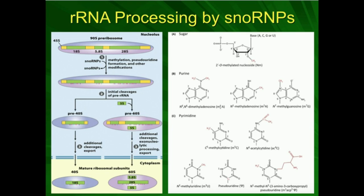We transport the mature ribosomal RNAs and their associated proteins out of the nucleolus, ultimately out of the nucleus, and into the cytoplasm where ribosomes exist in eukaryotes. The result is a mature 40S subunit containing an 18S ribosomal RNA, and a mature 60S subunit containing three important rRNAs: a 5.8S, a 28S, and a 5S ribosomal RNA. These rRNAs are important for the function of the subunits — some are structural and some are catalytic, actually performing the enzymatic mechanism of the ribosome.